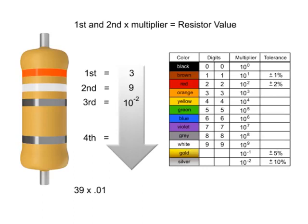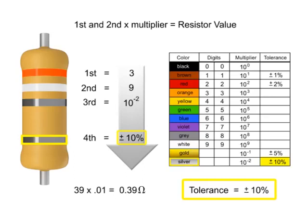Thus, the value of this resistor is .39 ohms with a tolerance of plus or minus 10%.